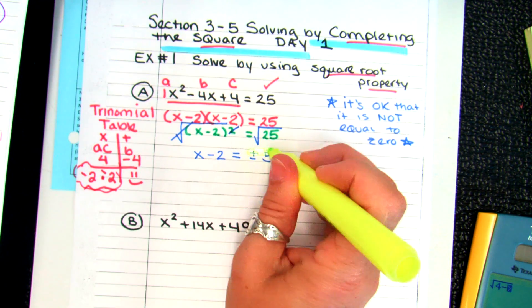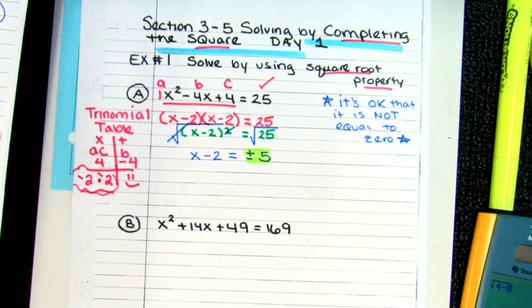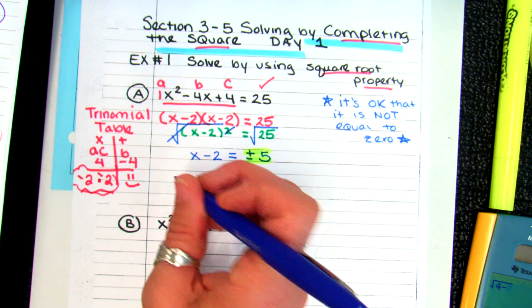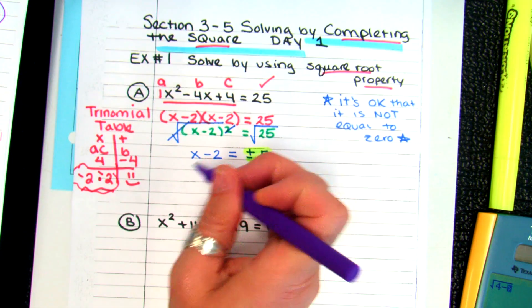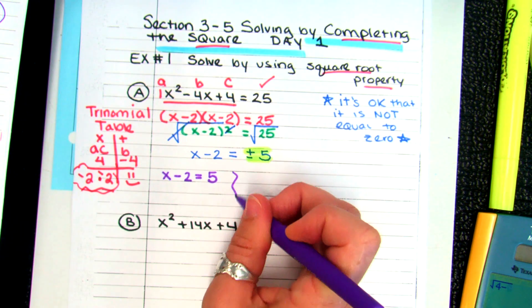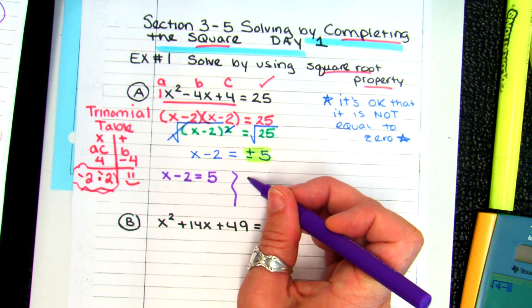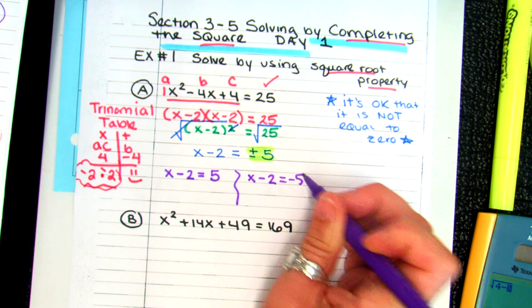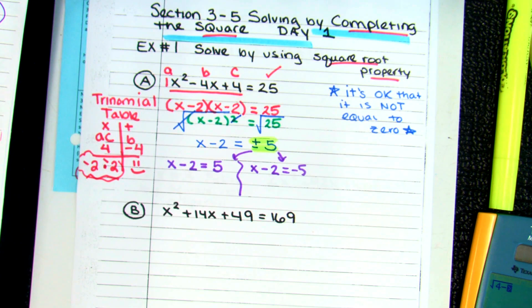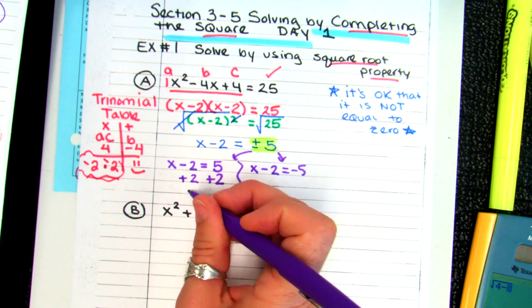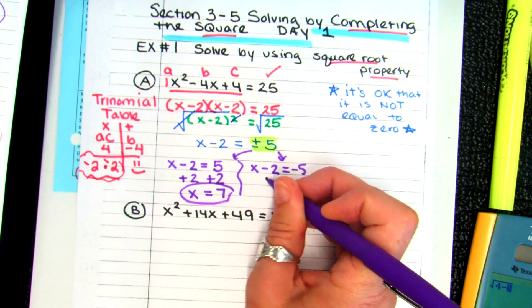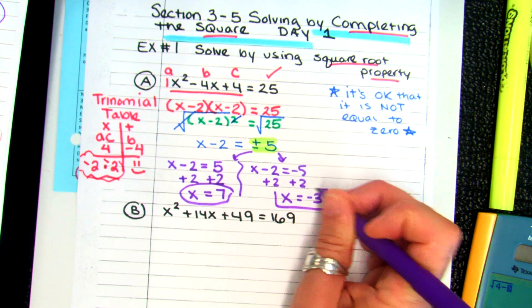We're going to set up two equations. The two equations will be X minus two equals a positive five. What's the second equation? X minus two equals a negative five. So we take this plus and minus and split it up so that we can now solve for X. What are we going to do to solve for X on the first one? We're going to add two to both sides. What are we going to do for the second one? Same thing. If I add two on this one, X equals seven. And if I add two on this one, X equals negative three. Beautiful. Nice job.